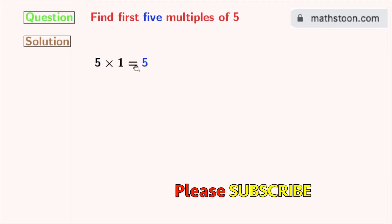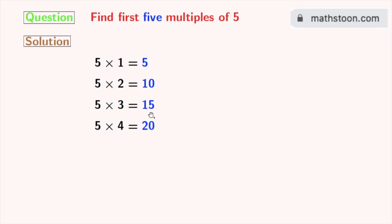5 times 1 is 5, 5 times 2 is 10, 5 times 3 is 15, 5 times 4 is 20, and 5 times 5 is 25.